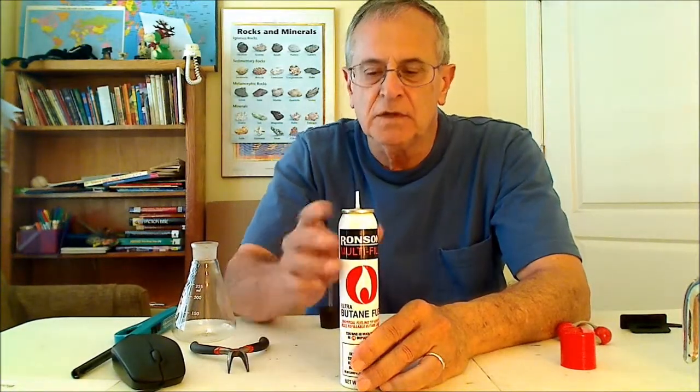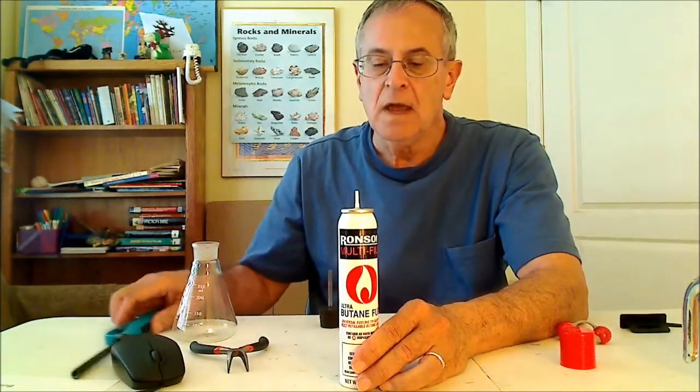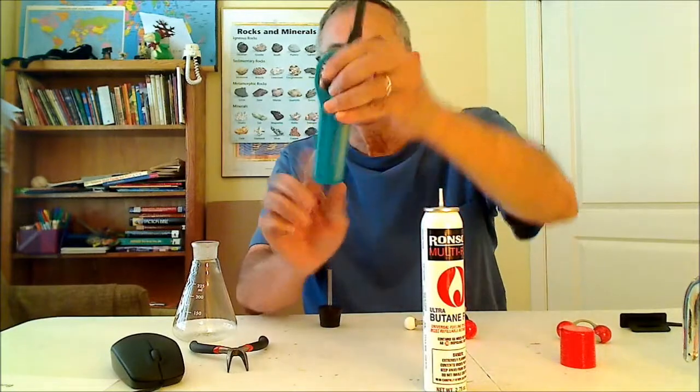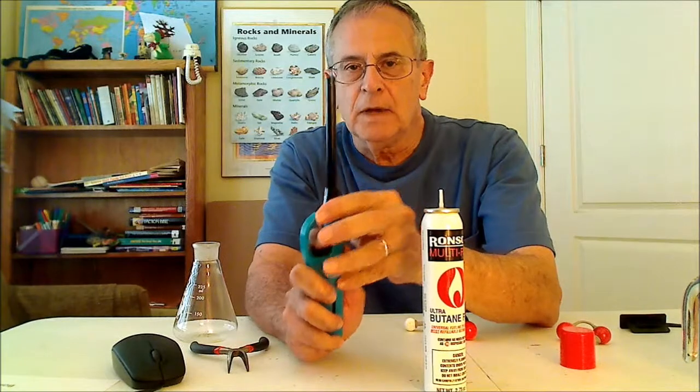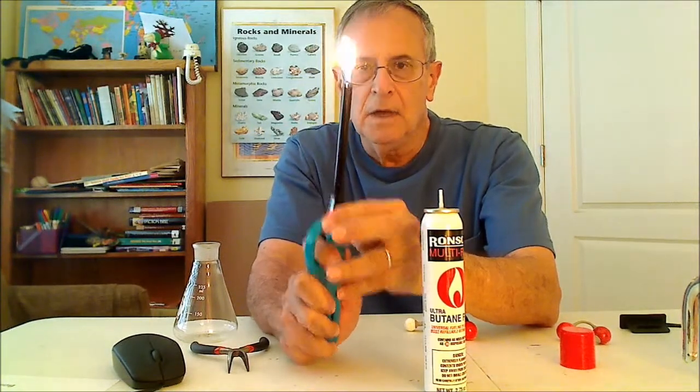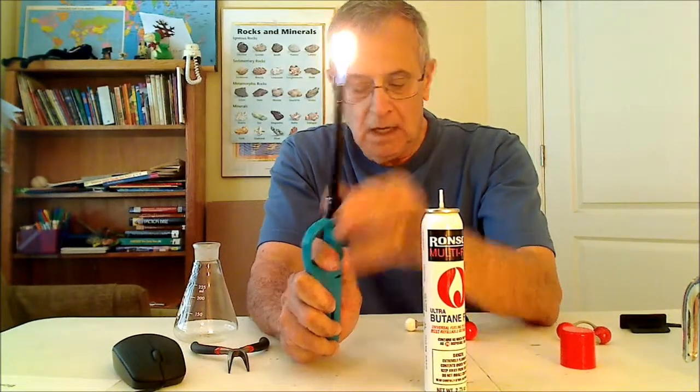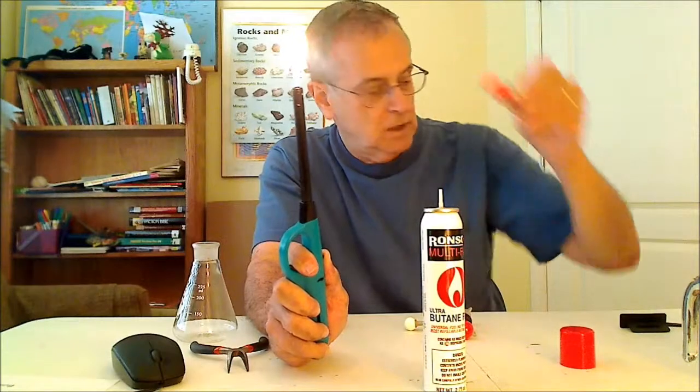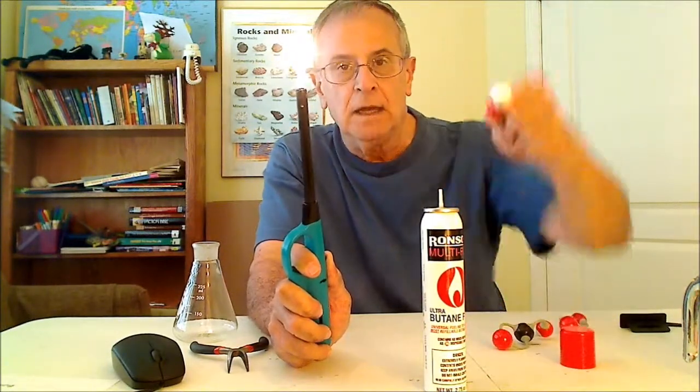Now at room temperature the vapor pressure of butane is two atmospheres, so the pressure above the liquid in here is two atmospheres. That's called the vapor pressure. When I open the valve and ignite it, the vapor will come out and combine with oxygen and forms carbon dioxide and water.